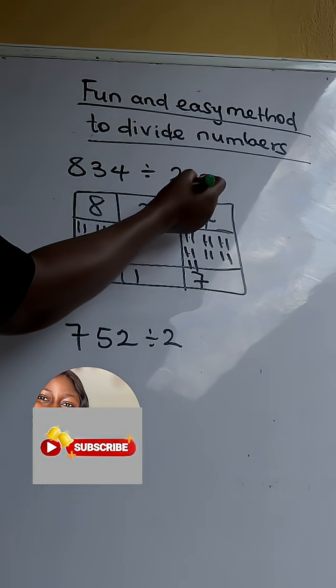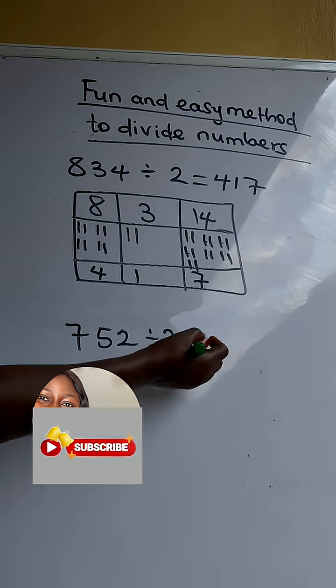So 834 divided by 2 will be equal to 417. So try this.